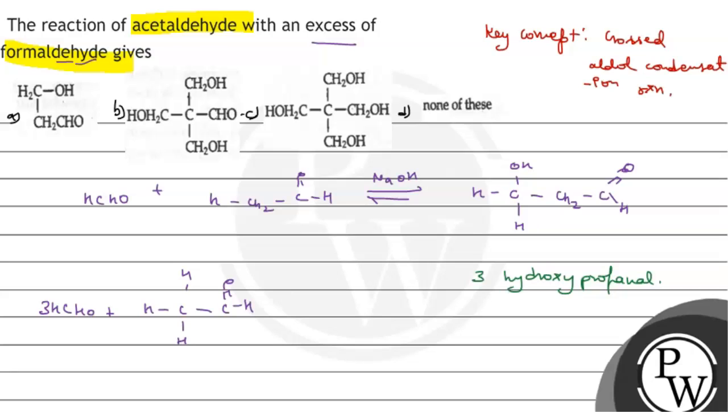Right, and it will give the product: carbon single bond carbon, then we have hydrogen, hydrogen, hydrogen, and then we have CH2OH, again CH2OH, and then we have CH2OH. Right, this is the formation when we have excess of formaldehyde.